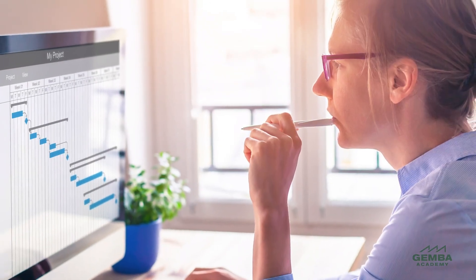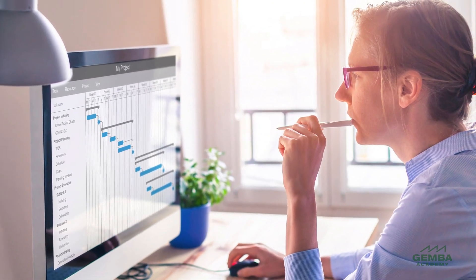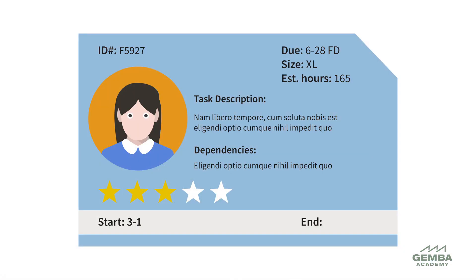The traditional approach to project planning involves breaking the project into tasks, then assigning start and end dates to tasks. Likewise, Kanban planning breaks down projects into tasks and estimates how long a team will need to complete all tasks. However, Kanban planning focuses on the probabilistic estimates of time rather than exact dates for creating a work plan.